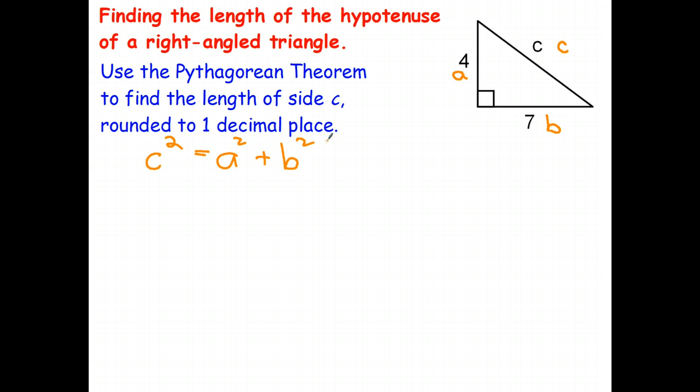To find the length of c, what we have to do first is to substitute. Now c we don't know, so I just write c squared. a is equal to four, so I get four squared, and b is equal to seven, seven squared.